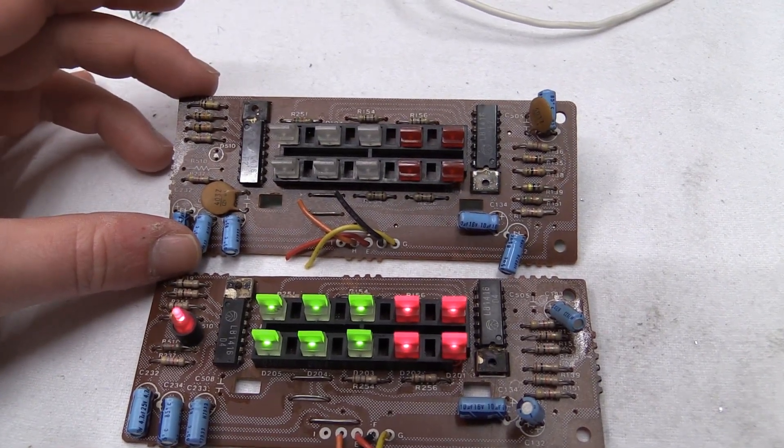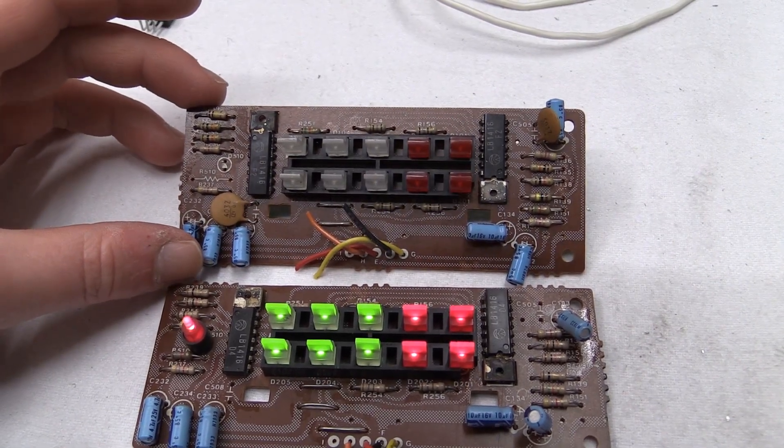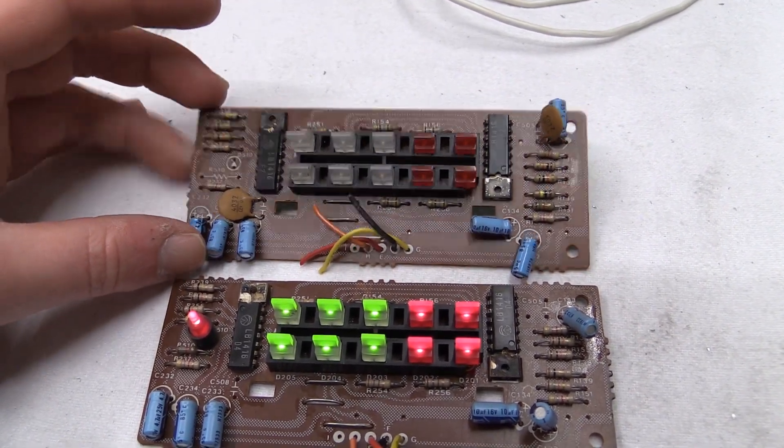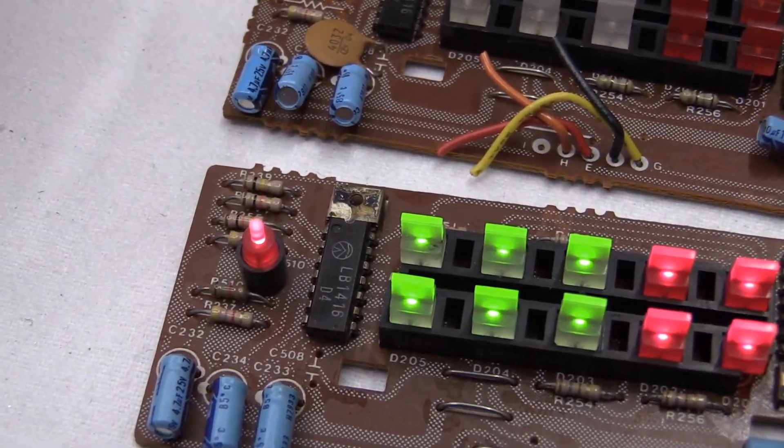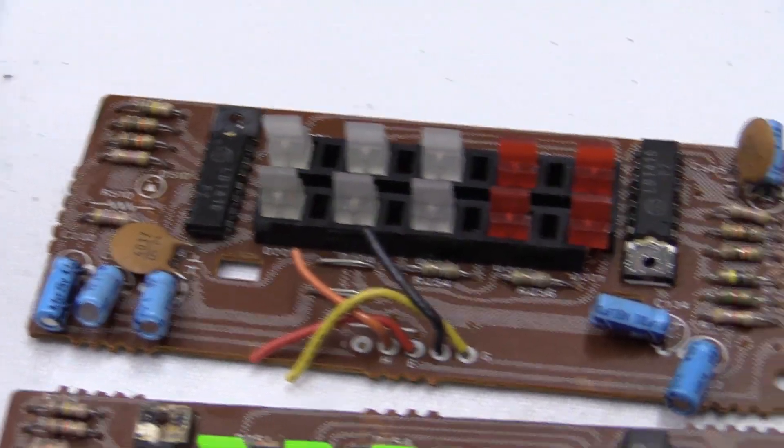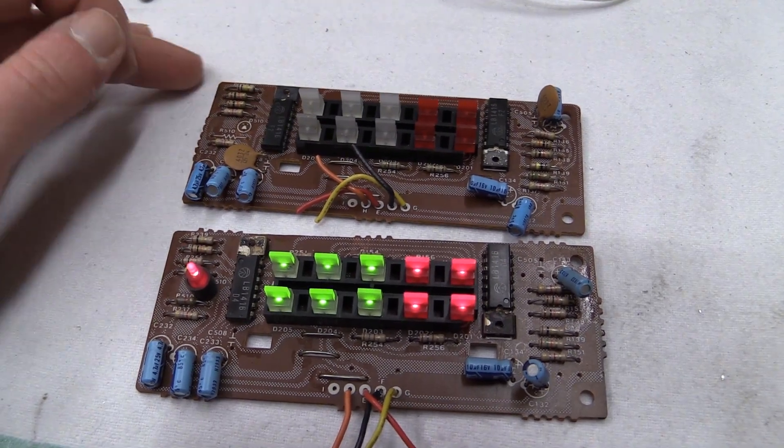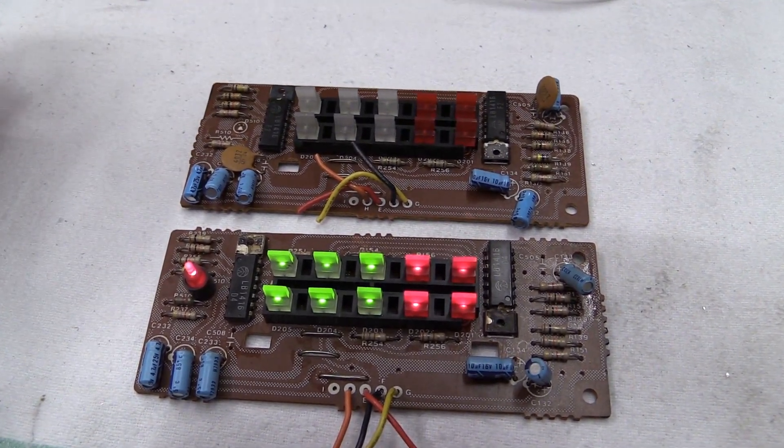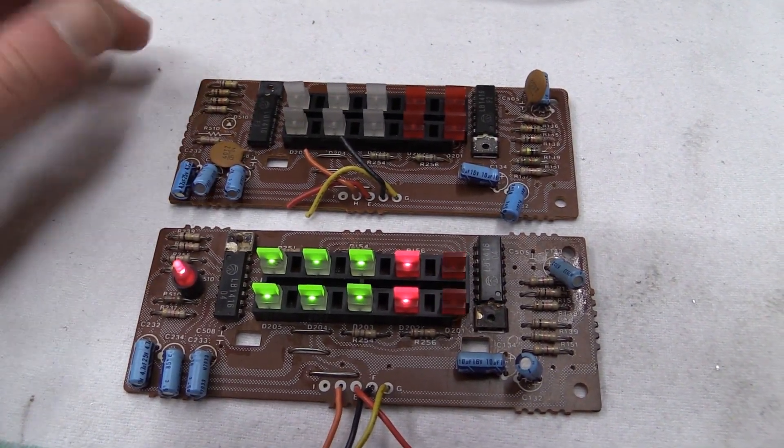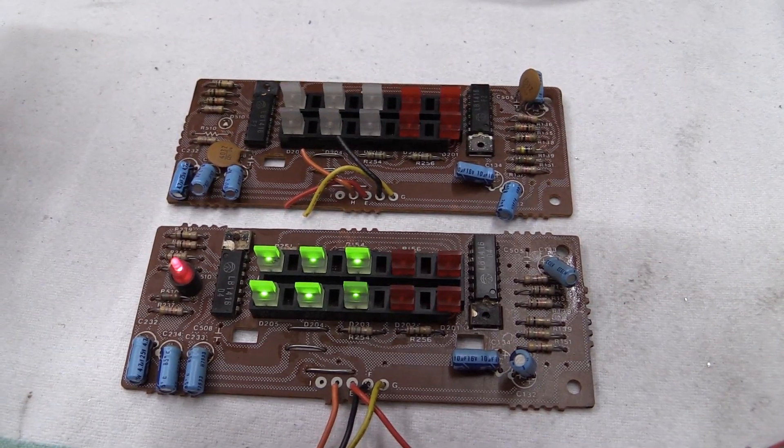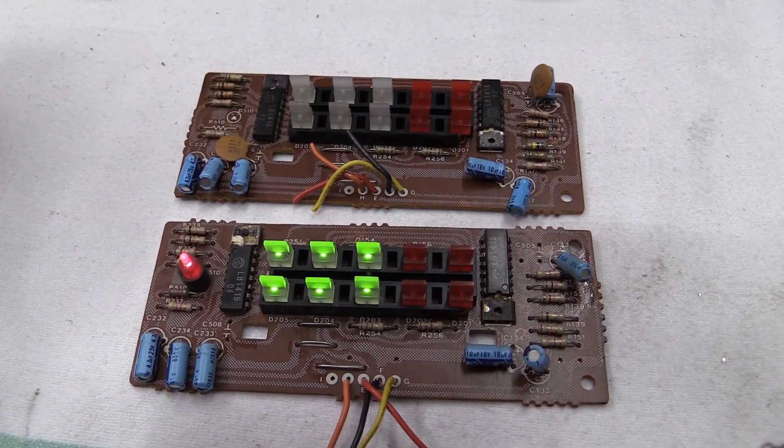And the nice thing about having two of these modules is you can actually go ahead and rip them apart and take the integrated circuits out, because you can actually hook these LB1416s up in a row. So with all this, I could get a 10 LED per channel display in stereo, since we got four of these chips. I may or may not actually try that. So there we have another two display modules.